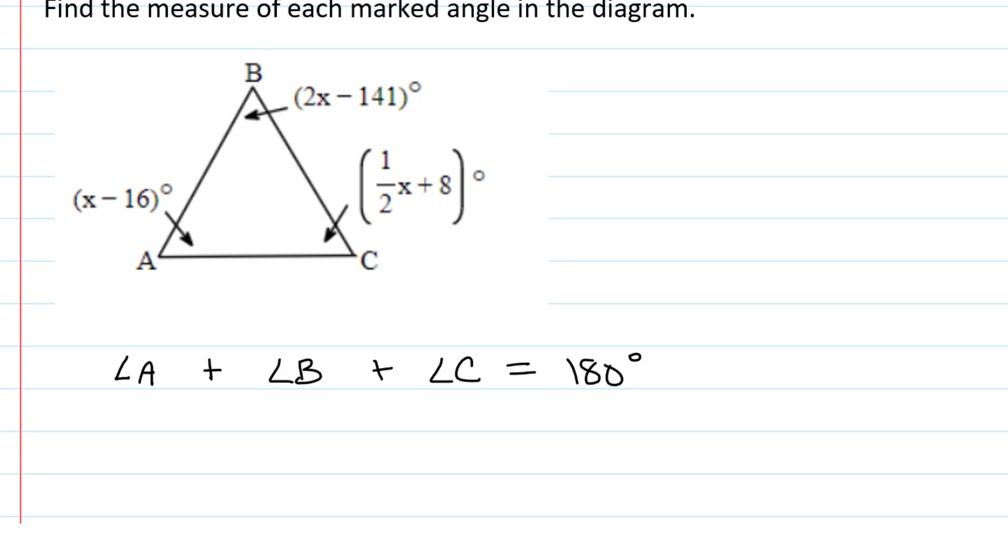Now angle A is marked as x minus 16, and angle B is marked as 2x minus 141, and angle C is marked as 1 half x plus 8. So we're going to add those together, and they have to add up to 180 degrees.